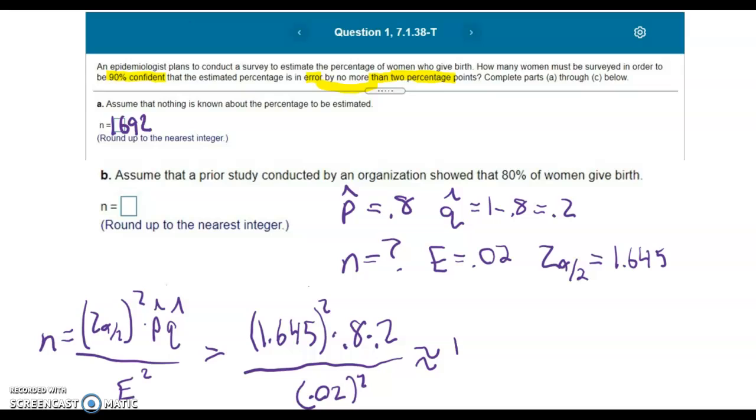You should get about 1,082.41. Once again, we have to round up. So the answer in this case is 1,083 equals N.